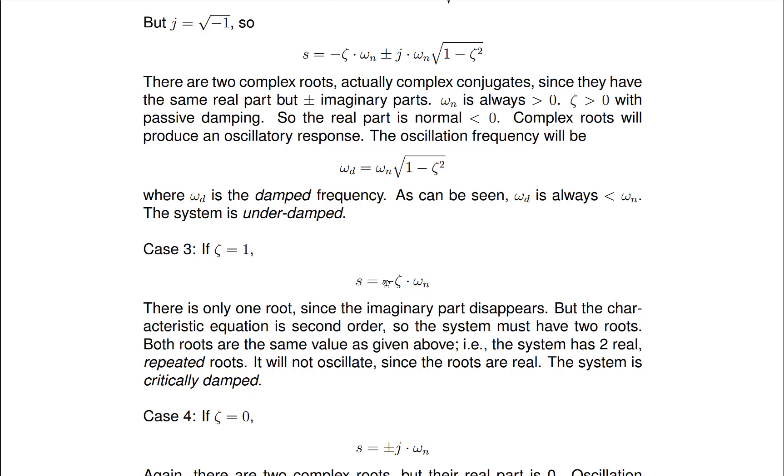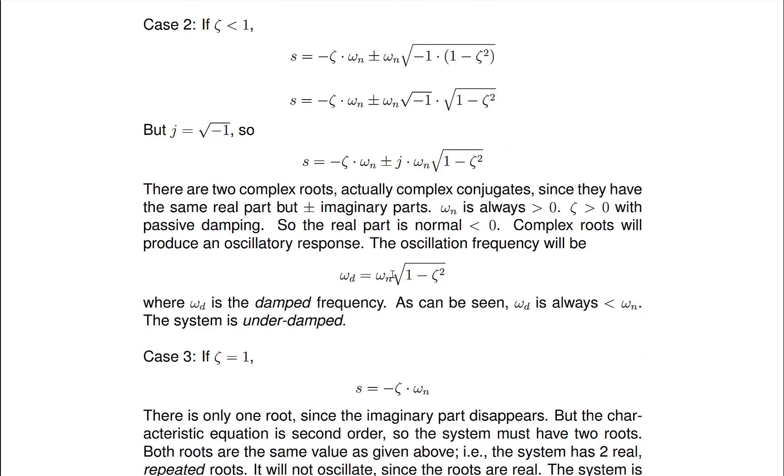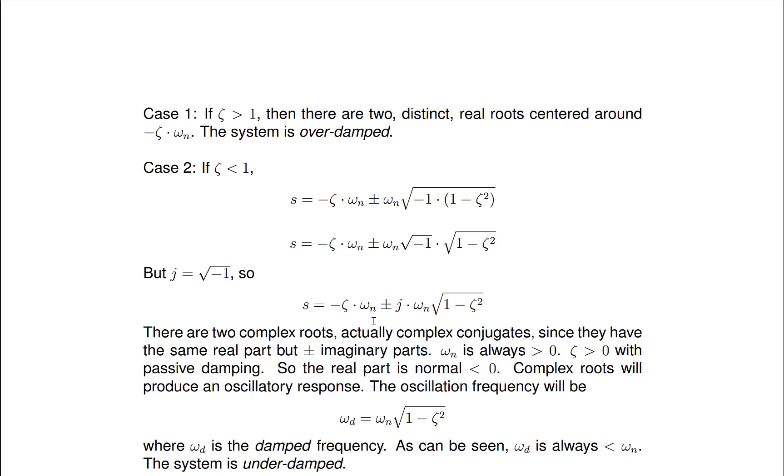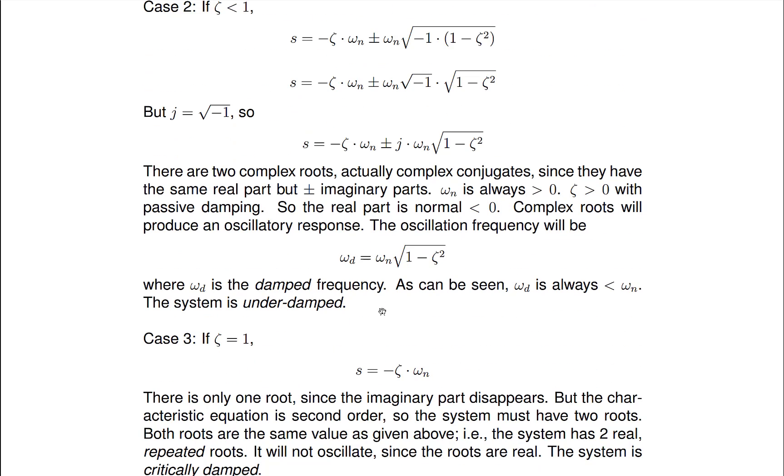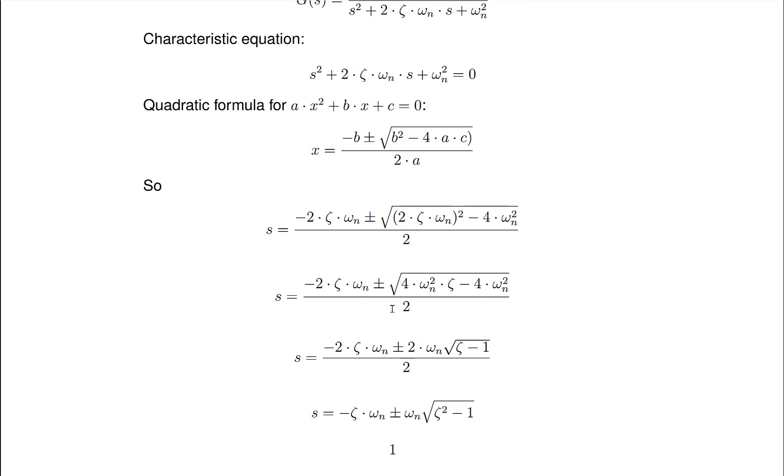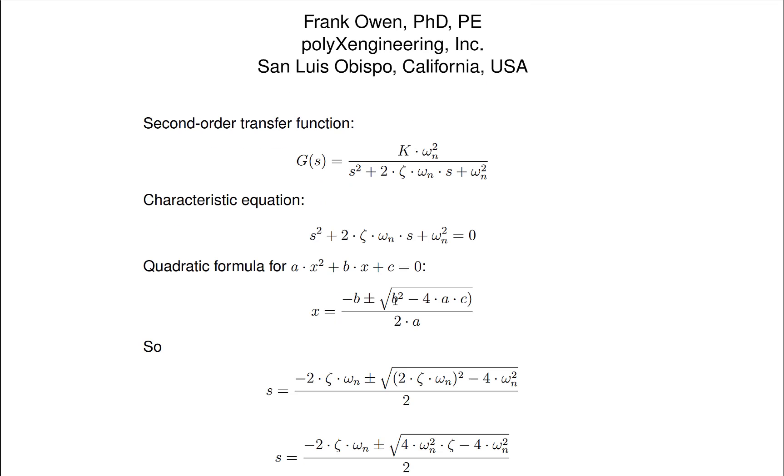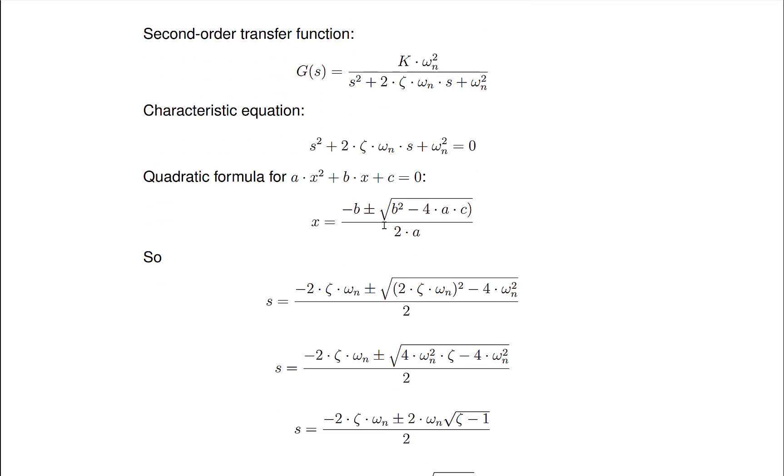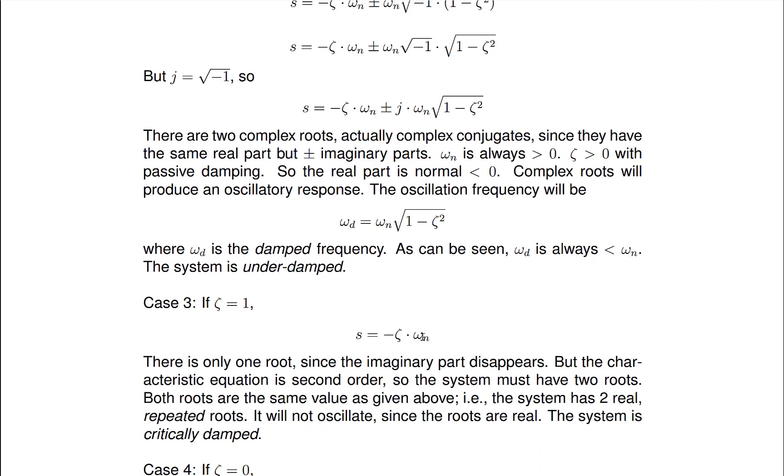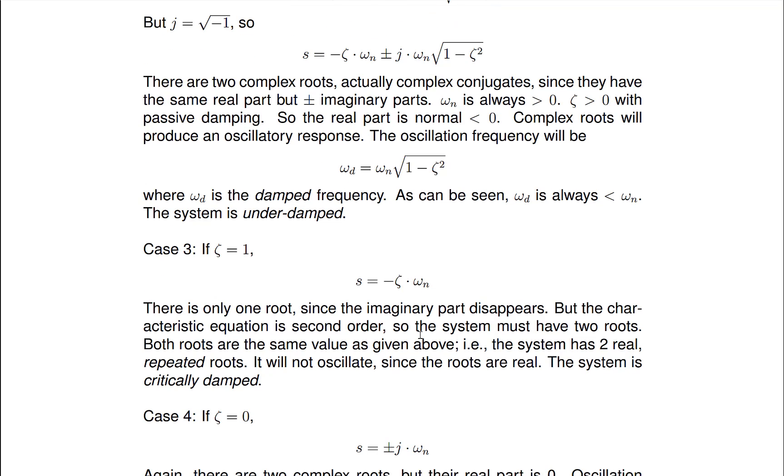It says that there's only one root because if we go back to our equation, the imaginary part disappears. So zeta equals 1, this goes away, and we're left just with omega n. And it looks like we just have one root. But the characteristic equation, which was up here, is a quadratic, which means we have to have two roots. So how do we explain this dilemma? Well, we have two repeated roots at negative omega n.